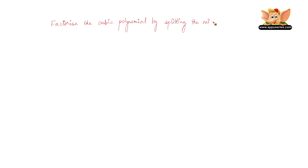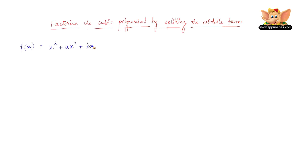Let us see how to factorize the cubic polynomial by splitting the middle term. Consider p equals x cubed plus ax squared plus bx plus c. This is the cubic expression that we need to factorize by splitting the middle term.